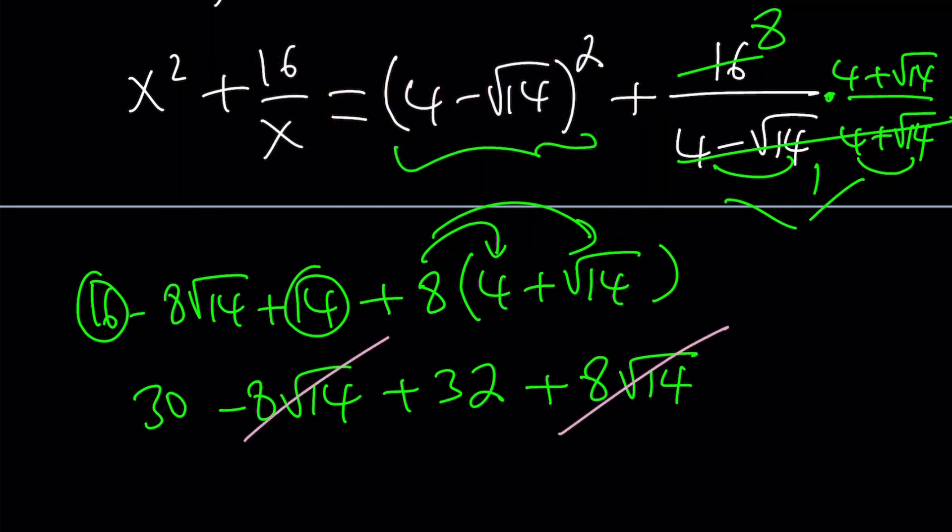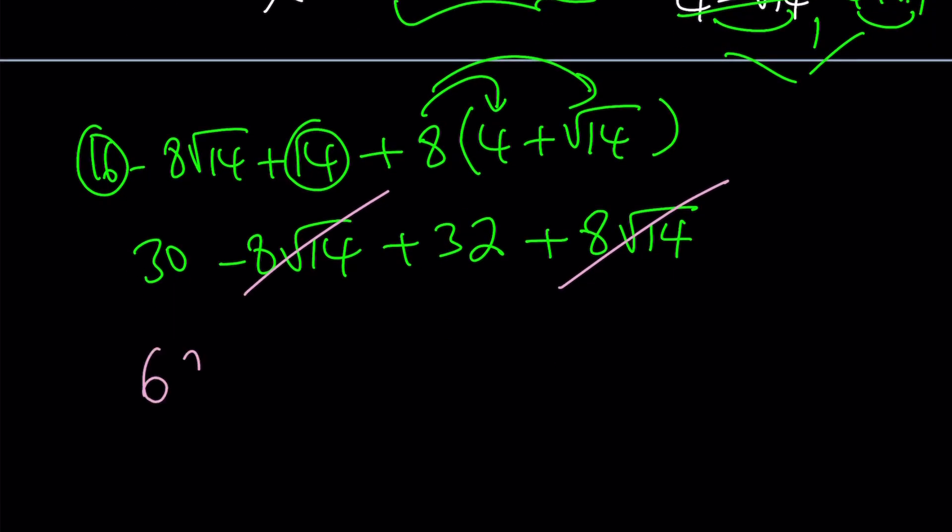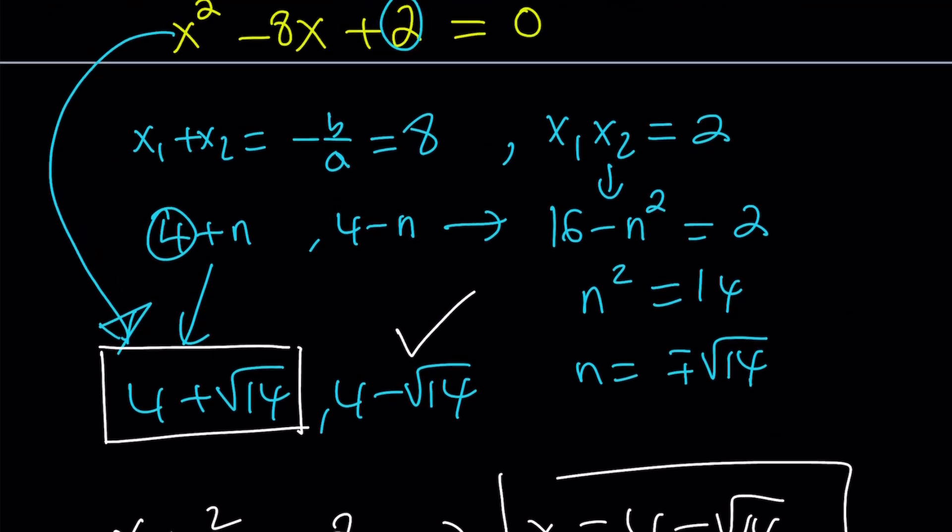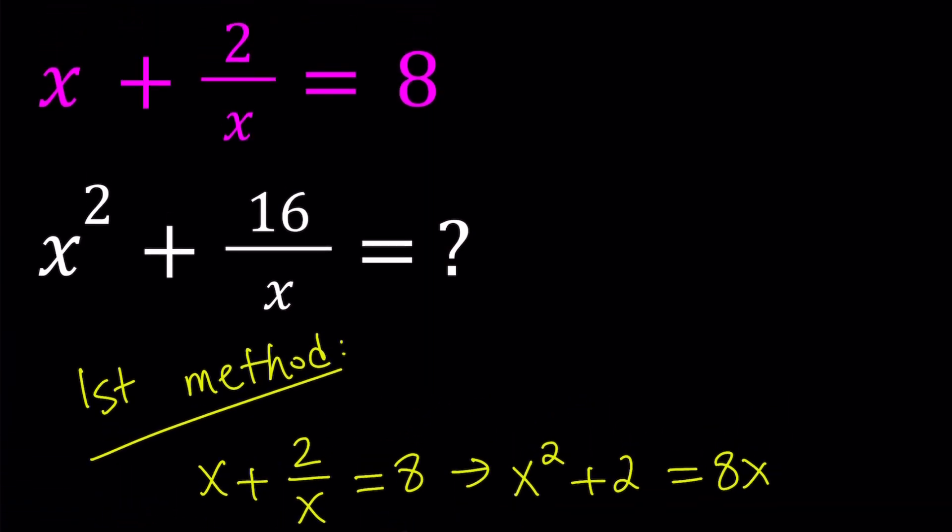Okay, I hope you're with me still. 8 root 14 cancels out. We end up with 30 plus 32. Why? That's so hard, isn't it? And the answer is 62. Like I said earlier, we were supposed to get a numerical value, not a variable expression. And we did.